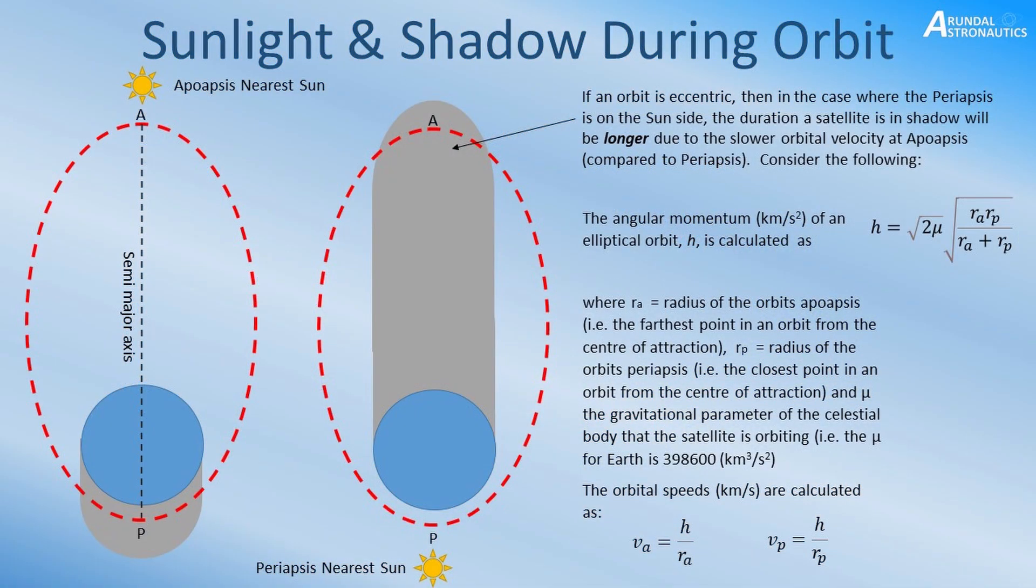So before we head into the more heavier calculations of actually finding out the duration of sunlight and shadow, let's take a look at what the orbit's actually doing and how these shadow areas are actually defined. When we're looking at the sunlight and shadow times there's two scenarios that exist with an orbit. We've got the example where either the apoapsis of the orbit is nearest the sun or we have the periapsis nearest the sun.